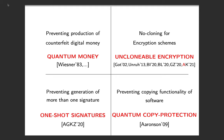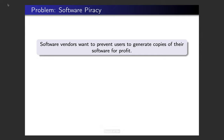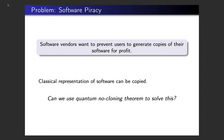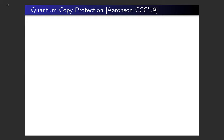Quantum copy protection is going to be the main focus of this talk. The problem involves a software vendor selling software: you want to ensure that users buying the software are not illegally distributing it for their own profit. Classical technology is not very useful here — if software is represented as binary strings, it can always be copied. A natural question is whether we can use the no-cloning theorem to solve this, and Aaronson introduced quantum copy protection to precisely address this problem.